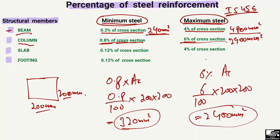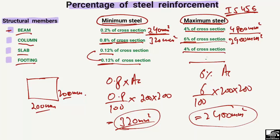For a slab, the minimum reinforcement is 0.12% of the cross-section and the maximum is 4% of the cross-section. For a footing, the minimum requirement is also 0.12%, similar to the slab. However, the maximum reinforcement for a footing is not a fixed value — it varies and there is no such fixed percentage specified for this structural member.